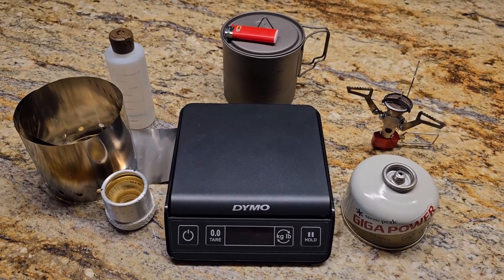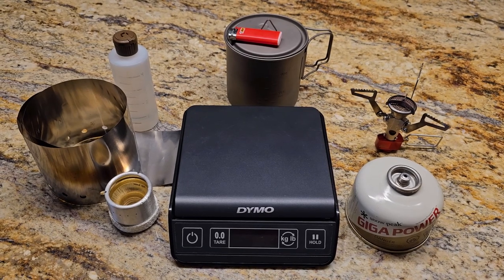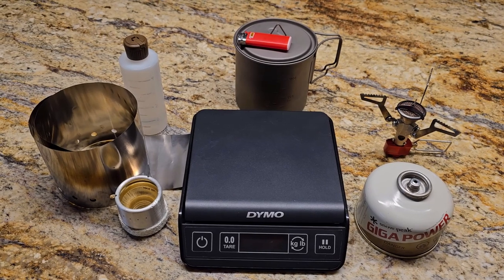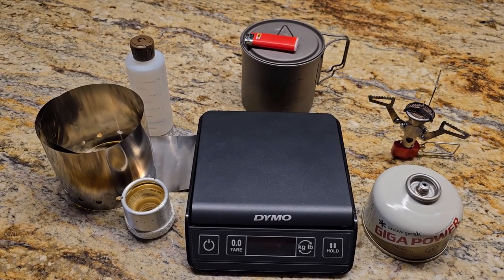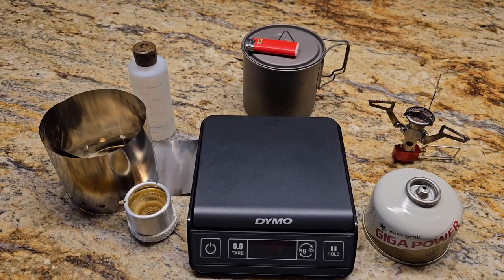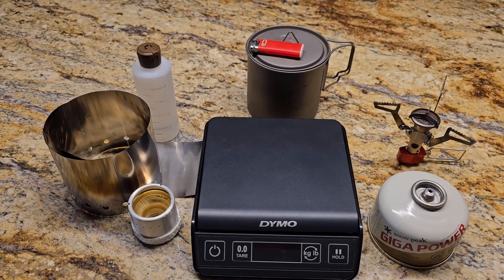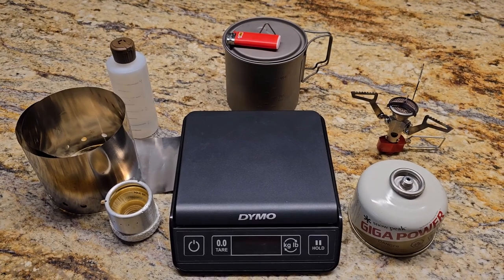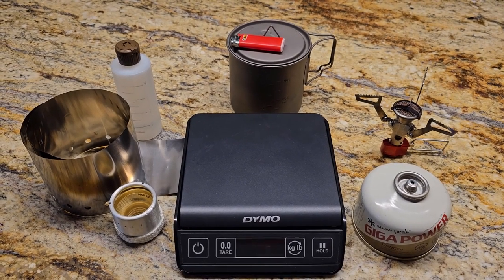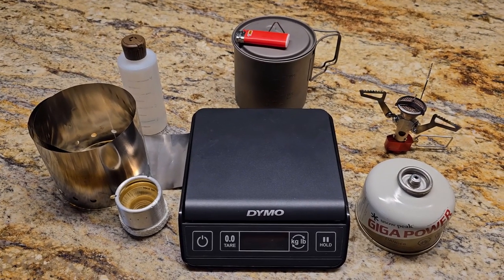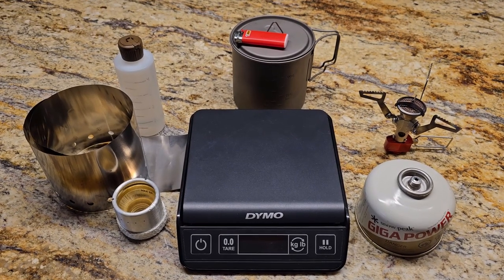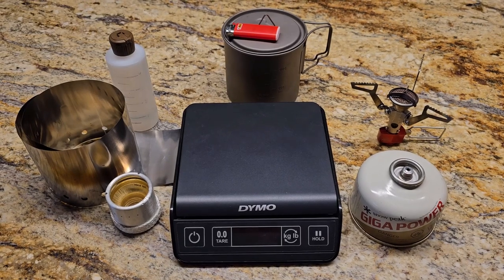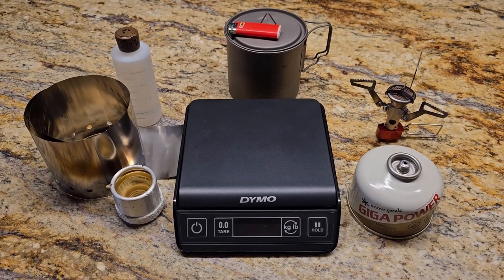So there on the left is my new stove setup. That is the Gram Weenie alcohol stove. It weighs 0.7 ounces and then a titanium foil windscreen that's pretty cheap and weighs hardly anything. So I was going to talk to you about the weight savings, the reason why I went to it, and talk about the efficiency of alcohol and when an alcohol stove setup is going to end up weighing more than your traditional canister stove fuel setup.